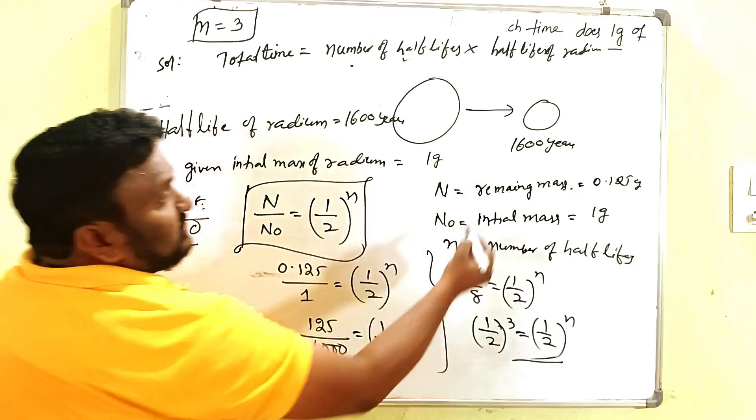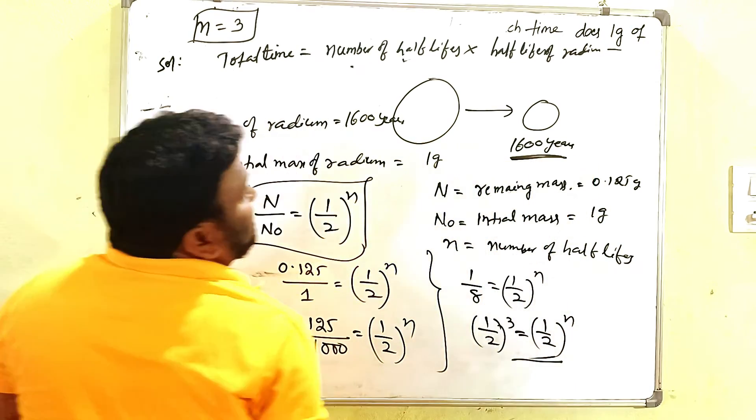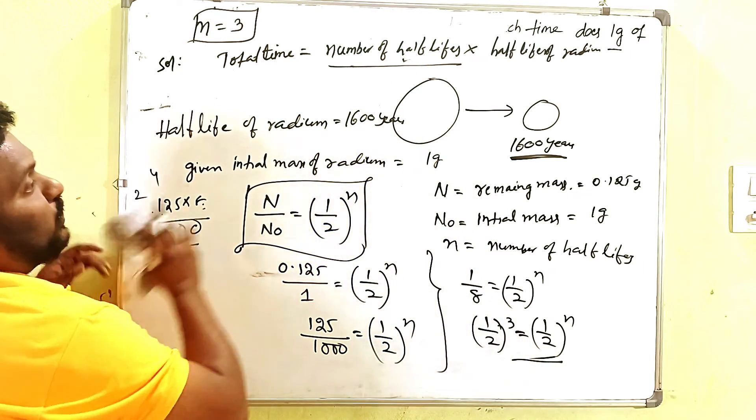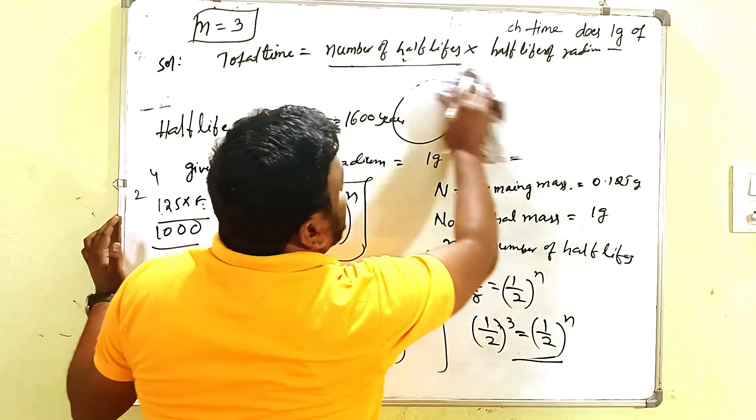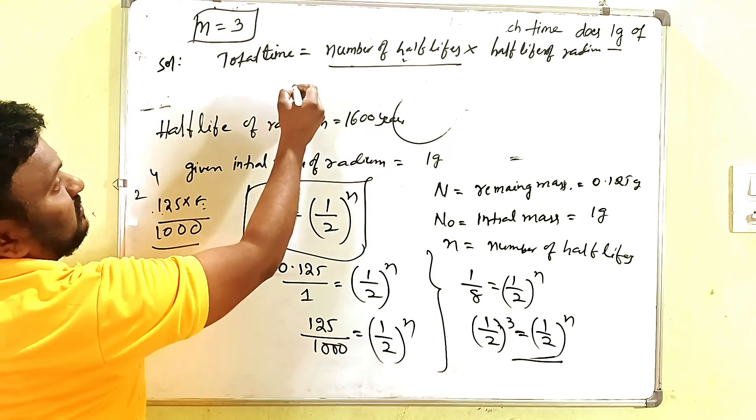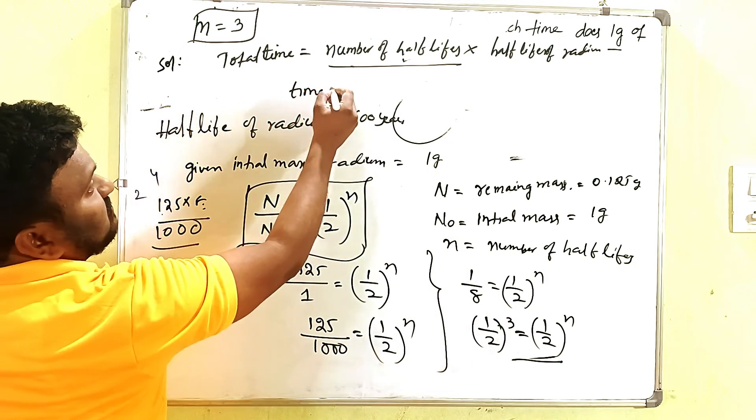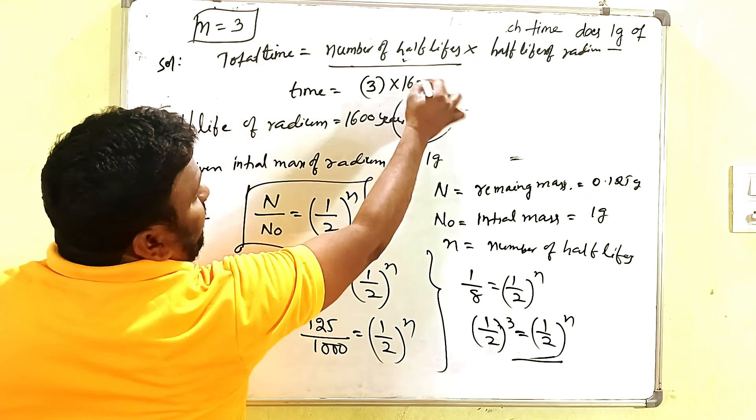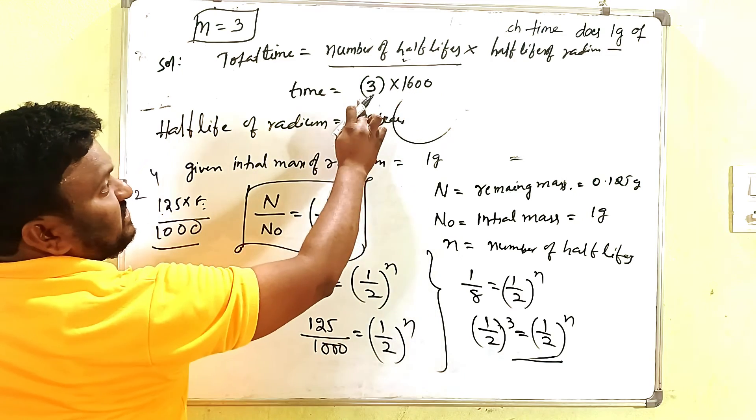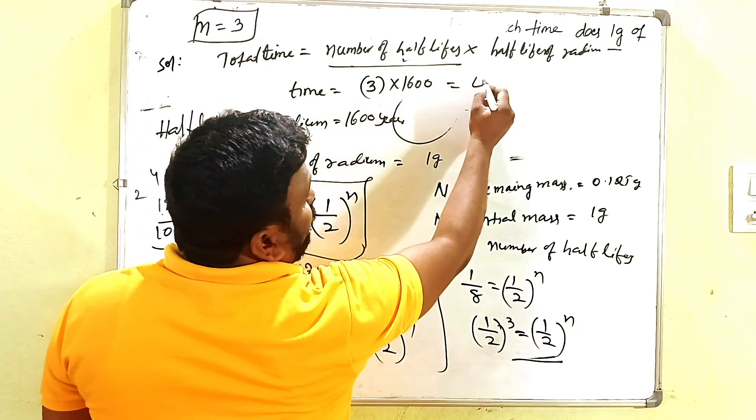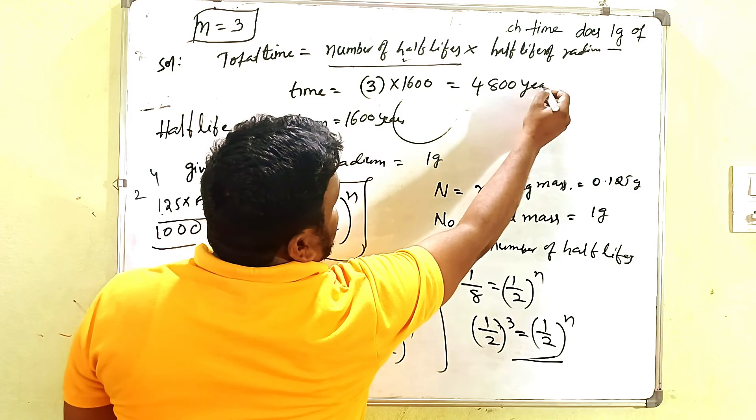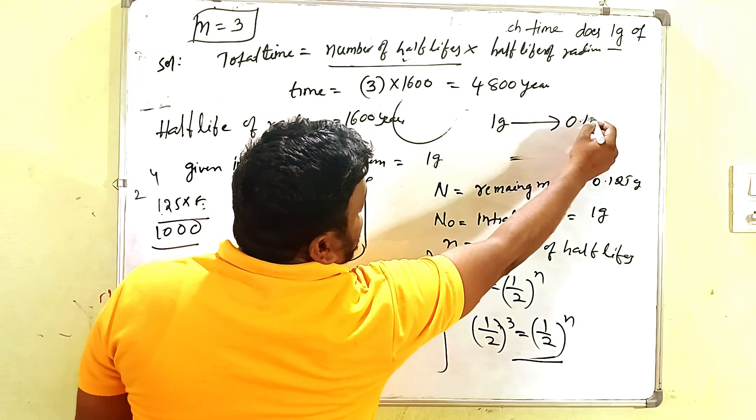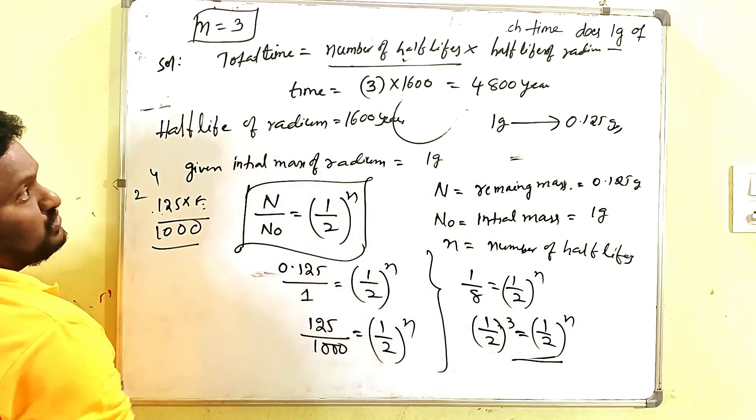So what is half-life of radium? 1600 years. And what is the number of half-lives? Three. That's why you have to substitute there. Then total time is what? Total time required is 3 into 1600, so 4800 years will be taken for 1 gram of radium to disintegrate into 0.125 grams.